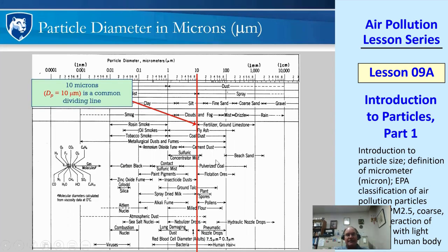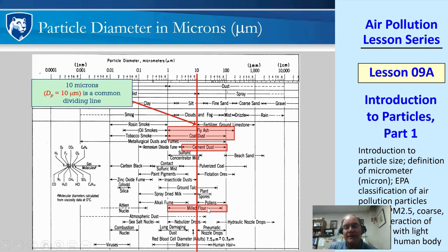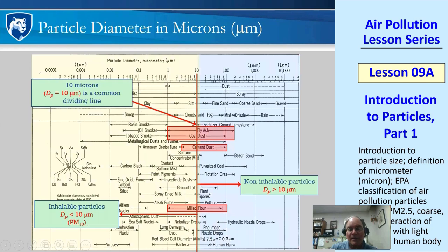Ten microns is a common dividing line. Particles centered around 10 microns include fly ash, coal dust, cement dust, and milled flour, which can range from a micron to about 100 microns. Talcum powder is about there too. Anything bigger than 10 microns we call non-inhalable because you can't get them into your breathing system — these fairly big particles get caught in your nose hairs or in the back of your throat.